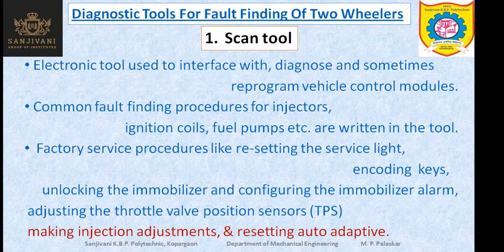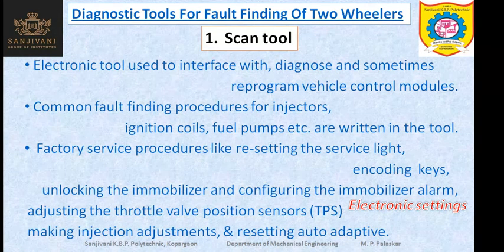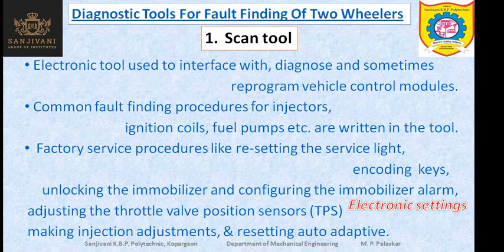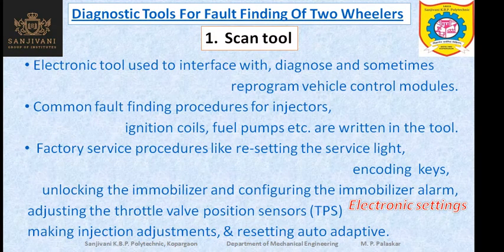The auto-adaptive settings can also be reset with help of the scan tool. All these are electronic settings which are done with help of the scan tool. The scan tool first uses the information to determine whether these settings are disturbed or not. If it is observed that the settings are disturbed, they can be adjusted according to the requirement. All these electronic settings can be adjusted with help of the scan tool.